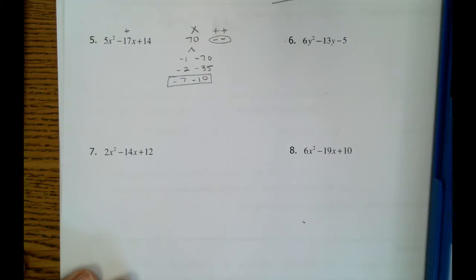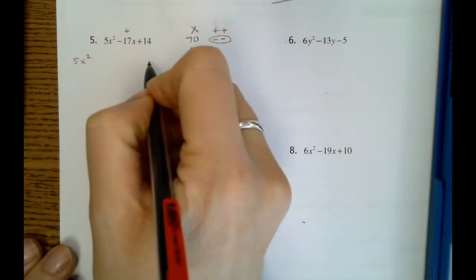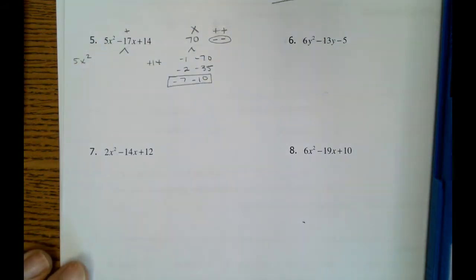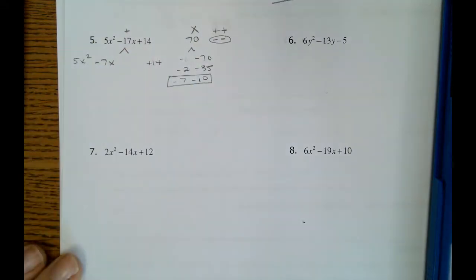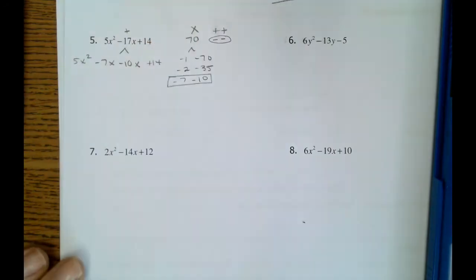So that's going to be our two numbers. We'll keep our outsides the same. And then we're going to split that middle term of negative 17 into negative 7. Make sure you keep that x there because then 17 had an x. And then the negative 10 will also have an x.